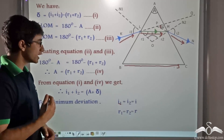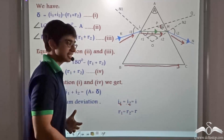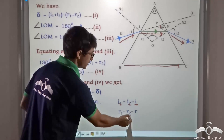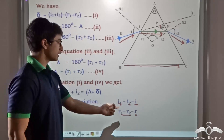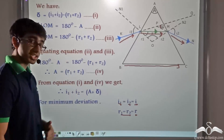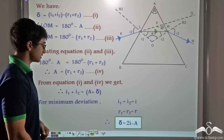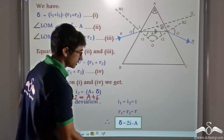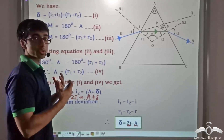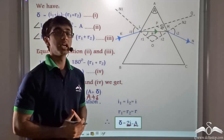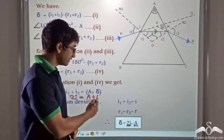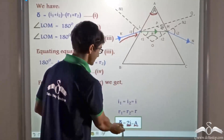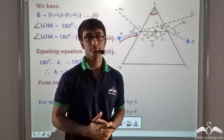For minimum deviation, I1 equals I2, and we call this value I. Similarly, R1 equals R2, and we call this value R. So the relation I1 + I2 = A + delta becomes 2I = A + delta, giving us delta = 2I − A. From this mathematical derivation, we can find the value of delta — the angle of minimum deviation — if we are given the angle of incidence and the angle of the prism.